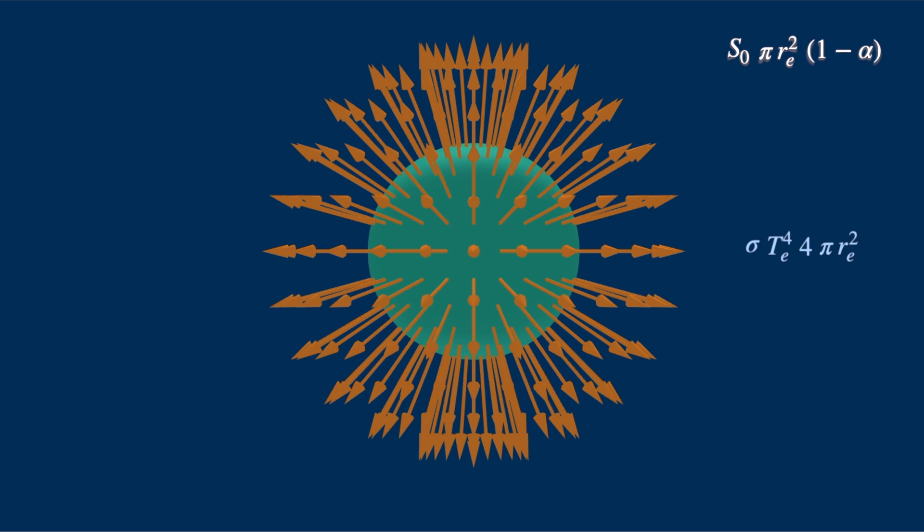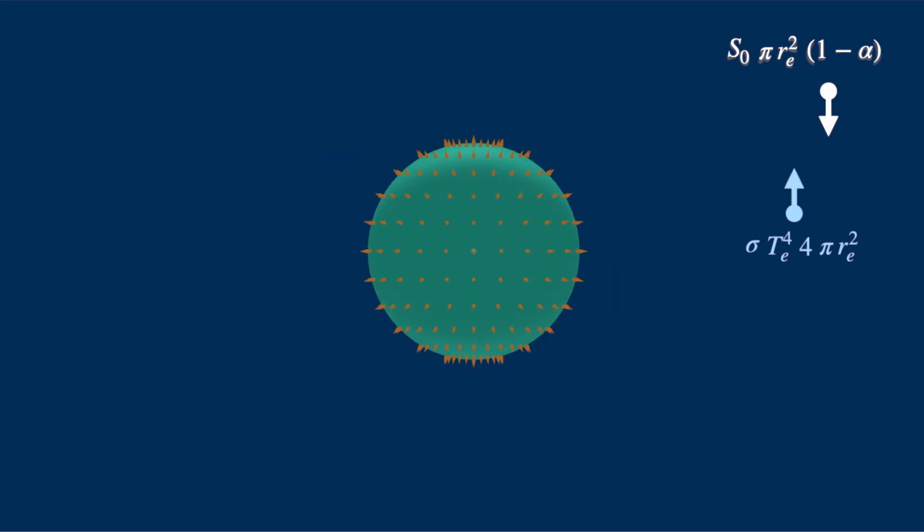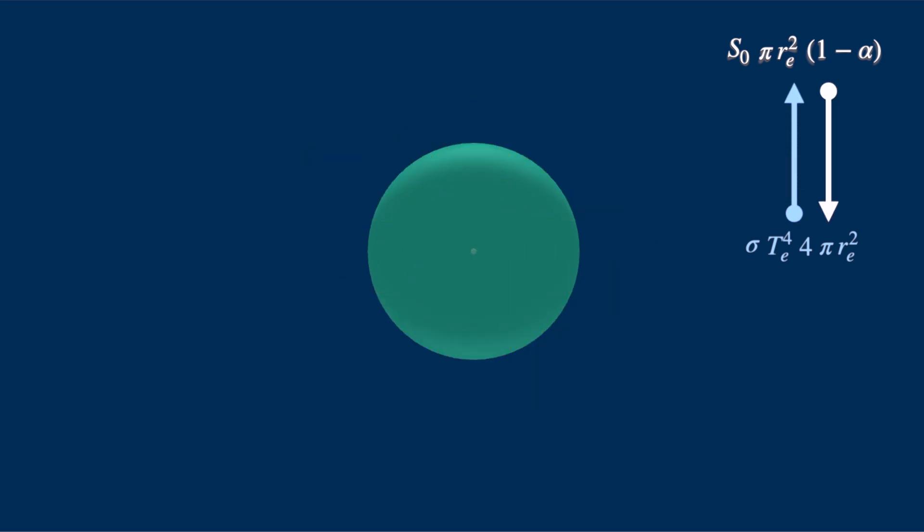For equilibrium to exist, the incoming and outgoing radiation must be equal. We can cancel the pi times R squared, and then isolate T underscore E on one side.